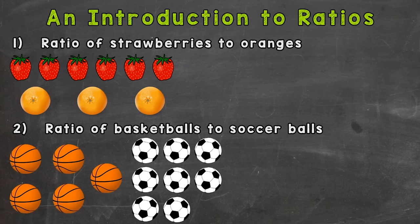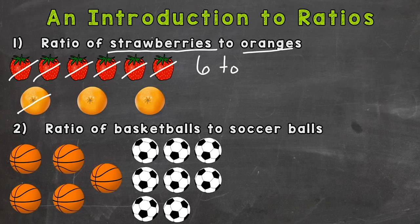So let's first start by counting the number of strawberries: one, two, three, four, five, six. So we have six strawberries to how many oranges? Well, one, two, three. Six to three.